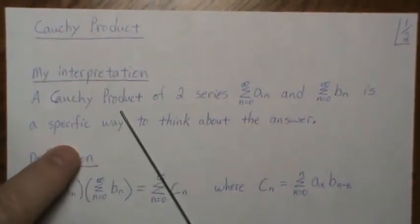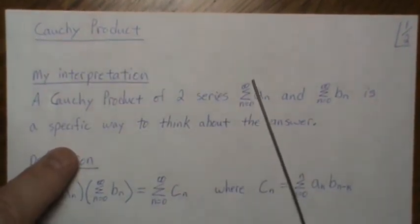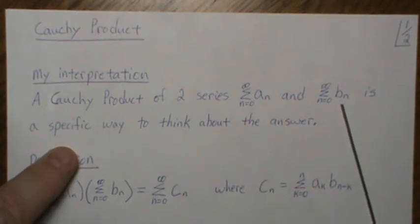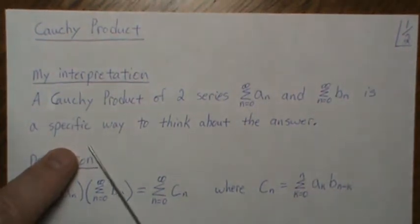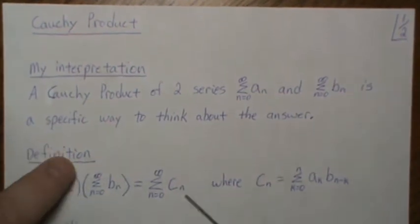So my quick and dirty interpretation of a Cauchy product: a Cauchy product of two series Σaₙ and Σbₙ, both going from zero to infinity, is a specific way to think about the answer.